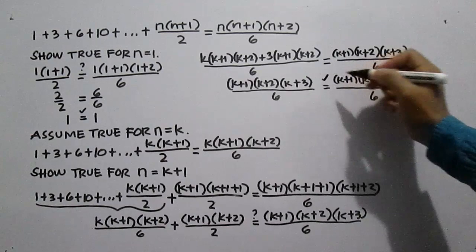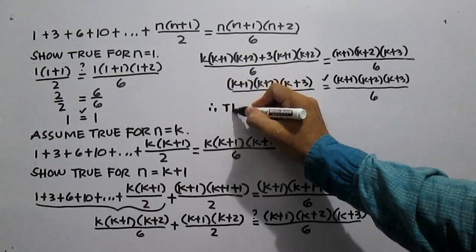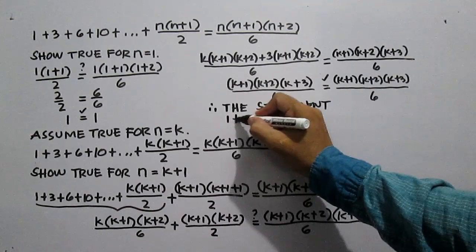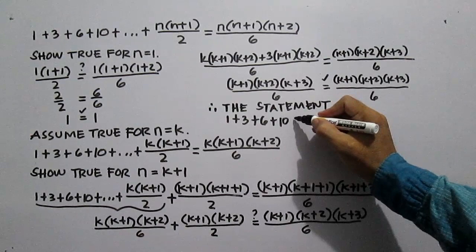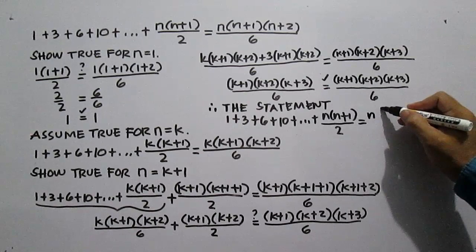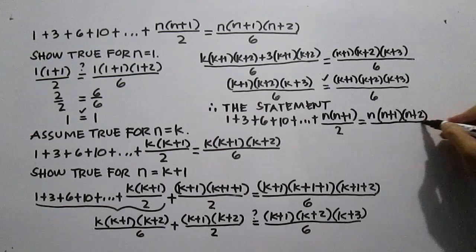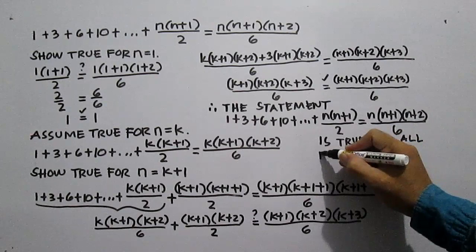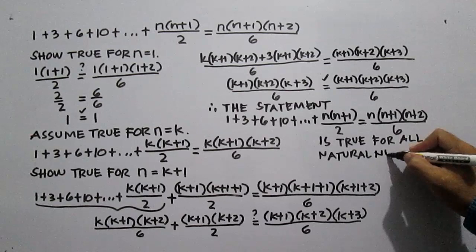Therefore, the statement 1 plus 3 plus 6 plus 10 plus dot dot dot plus n times the quantity n plus 1, all over 2, is equal to n times the quantity n plus 1 times the quantity n plus 2, all over 6, is true for all natural numbers n.